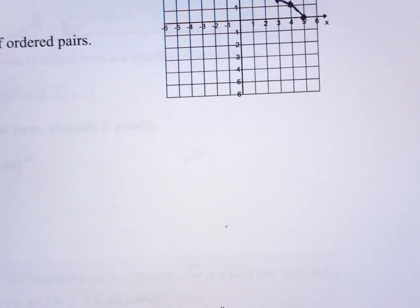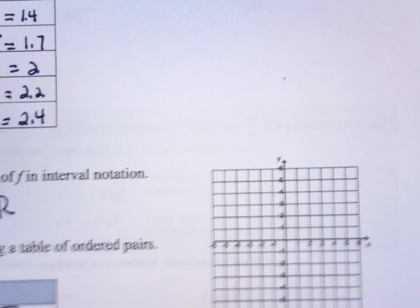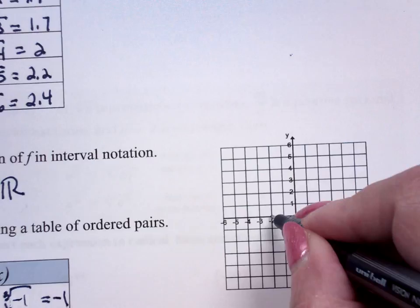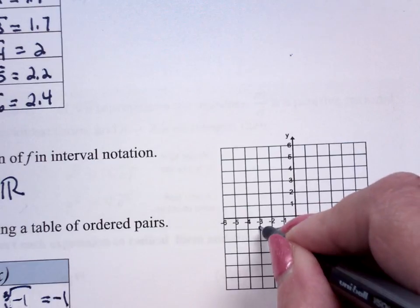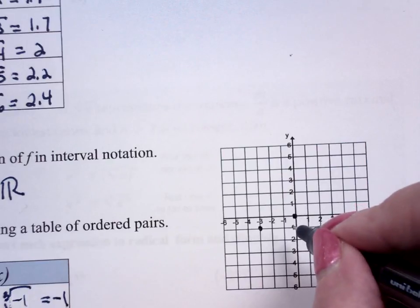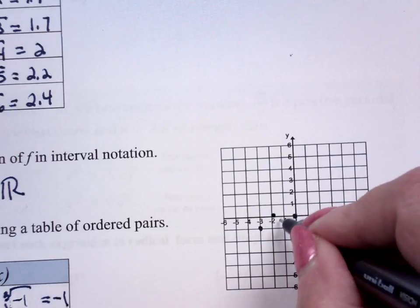Now we just graph them. So negative 3. Whoops, wrong piece of graph paper here. Negative 3, negative 1. Negative 3, negative 1. Negative 2, 0. Negative, negative 2, 0. Negative 1, 1.